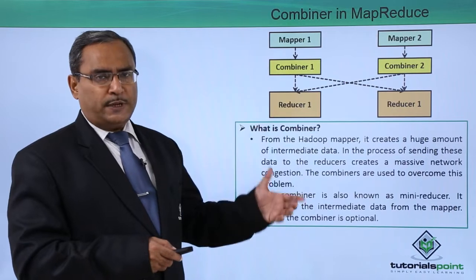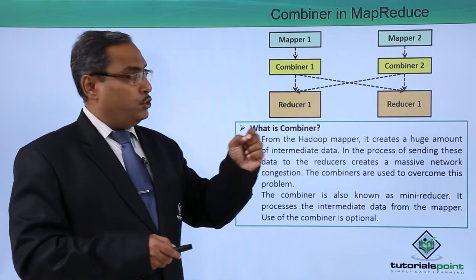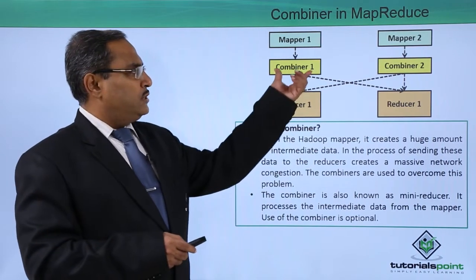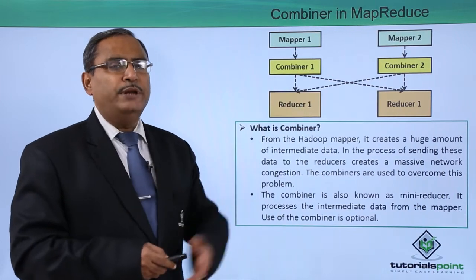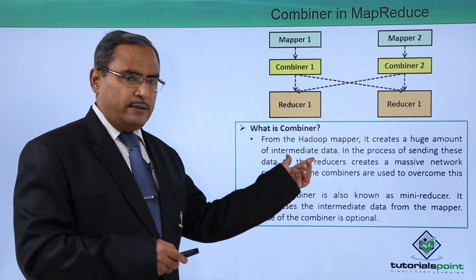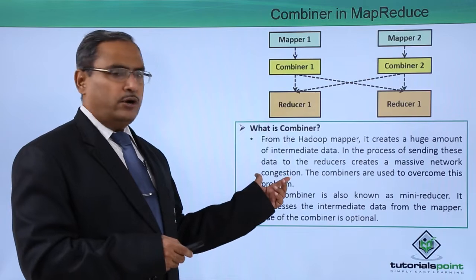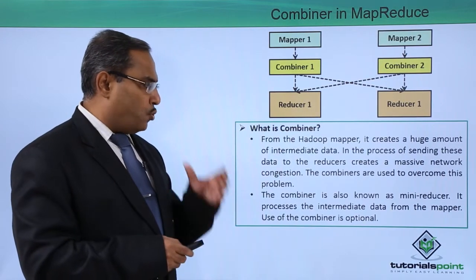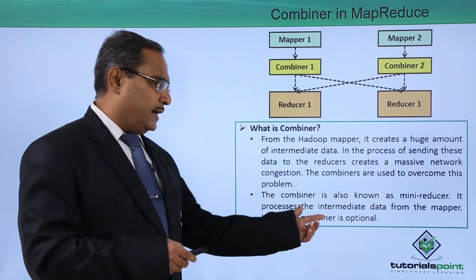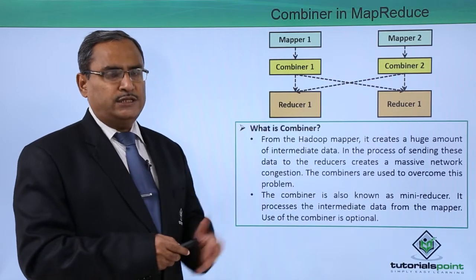Here it is shown that two mappers are there and the respective reducers are there. The intermediate output of the mapper will not be made available to the reducer directly because that will enhance the probability of network congestion. The combiner will be working in between, acting as a mini reducer. From the Hadoop mapper, it creates a huge amount of intermediate data, and sending this data to the reducer creates massive network congestion. The combiners are used to overcome this problem, and use of the combiner is optional in MapReduce.